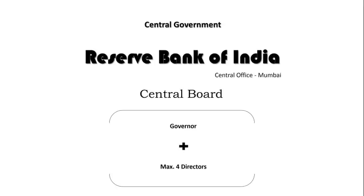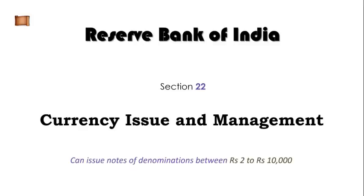Let's have a look at the screen right now — this is essentially the order in which these bodies have been arranged. The most important is the central government, then there is the Reserve Bank of India whose central office is at Mumbai. The management of RBI comprises a central board, and that board comprises one governor and a maximum of four directors. It is not necessary that the four directors are always present, but that is the composition of the central board of the RBI — one governor and maximum four directors.